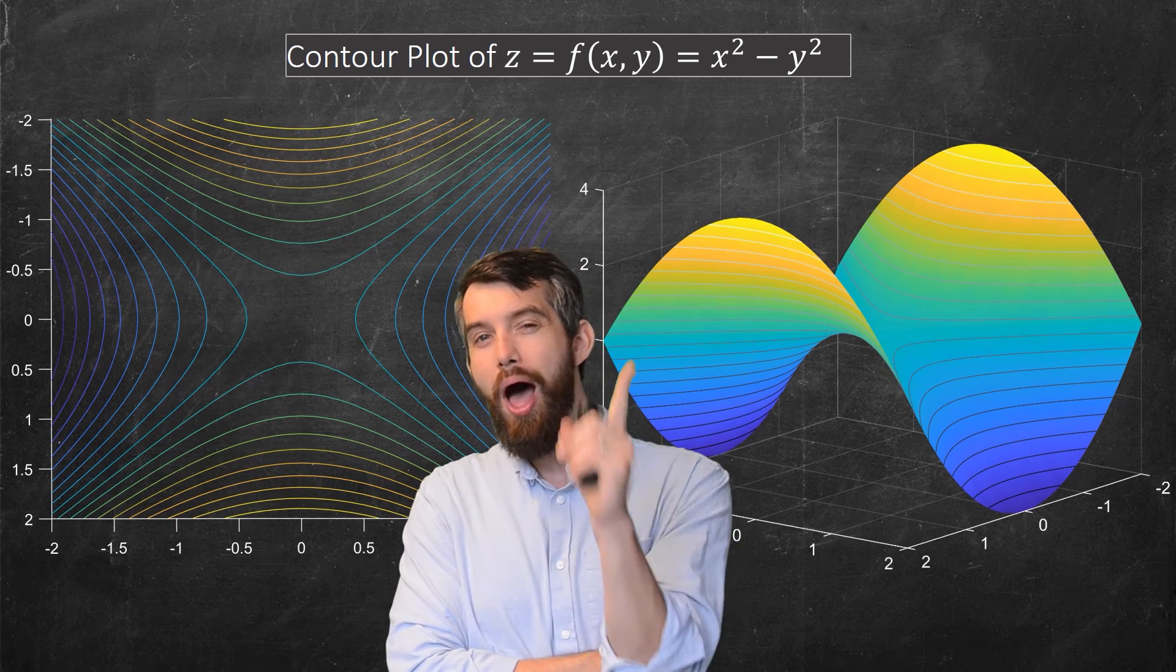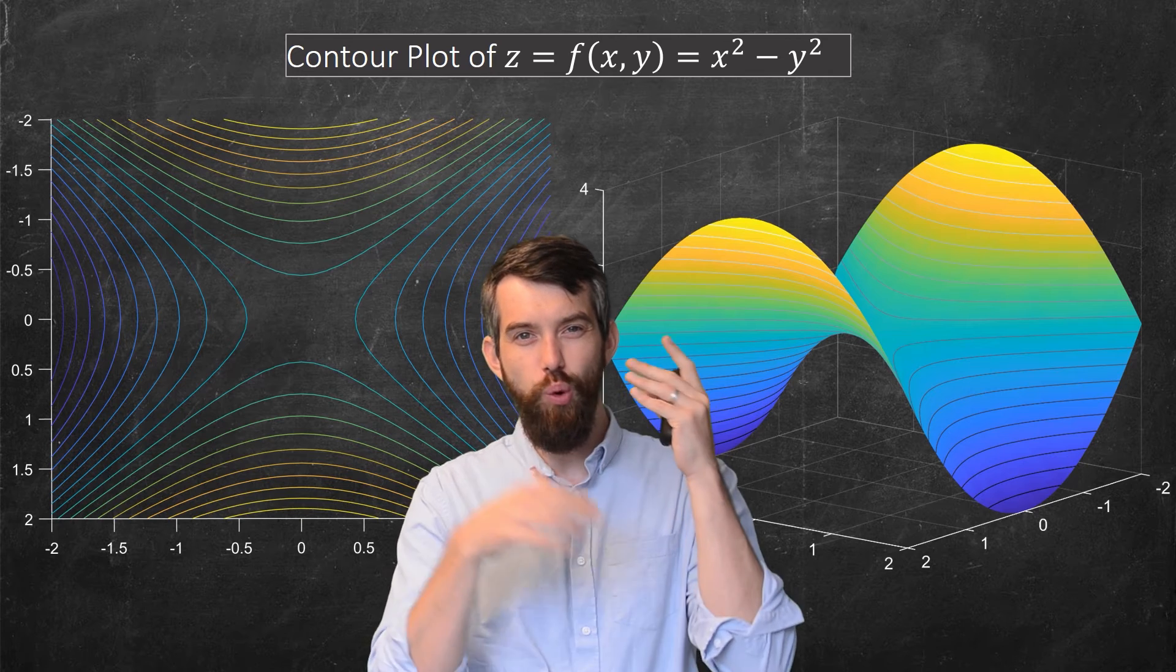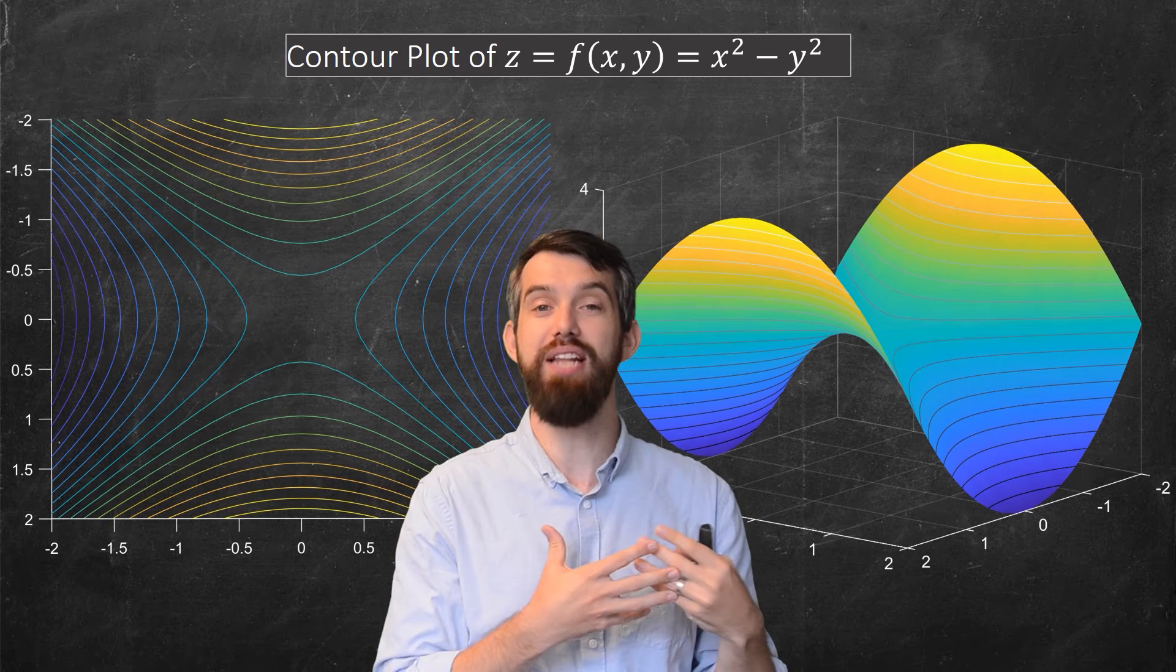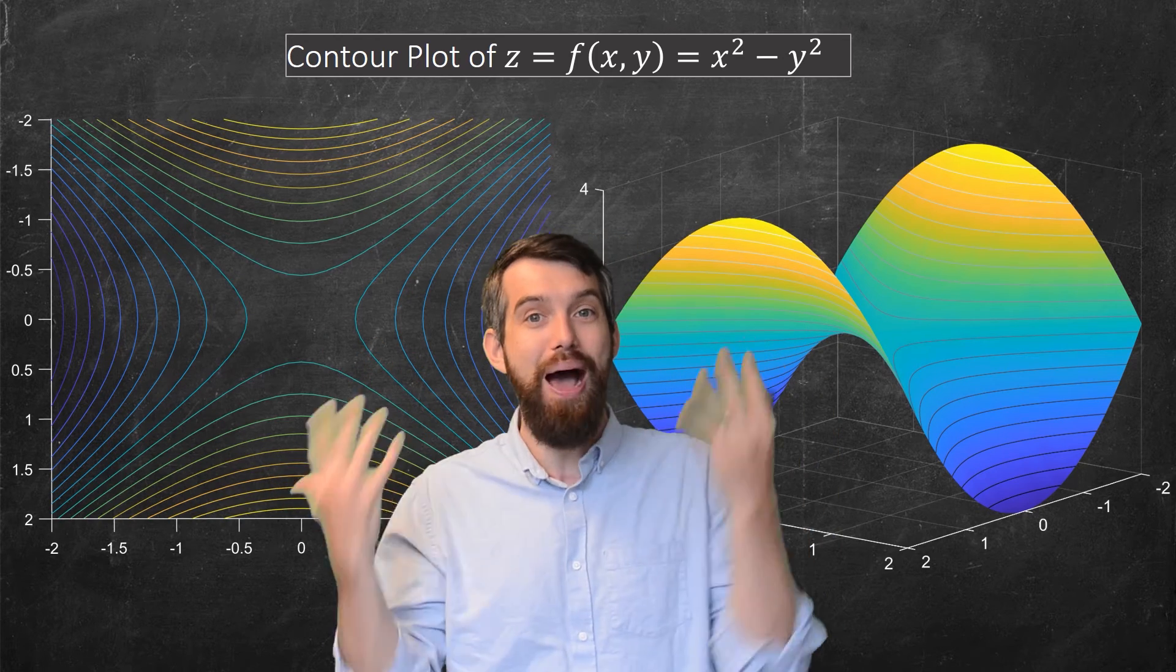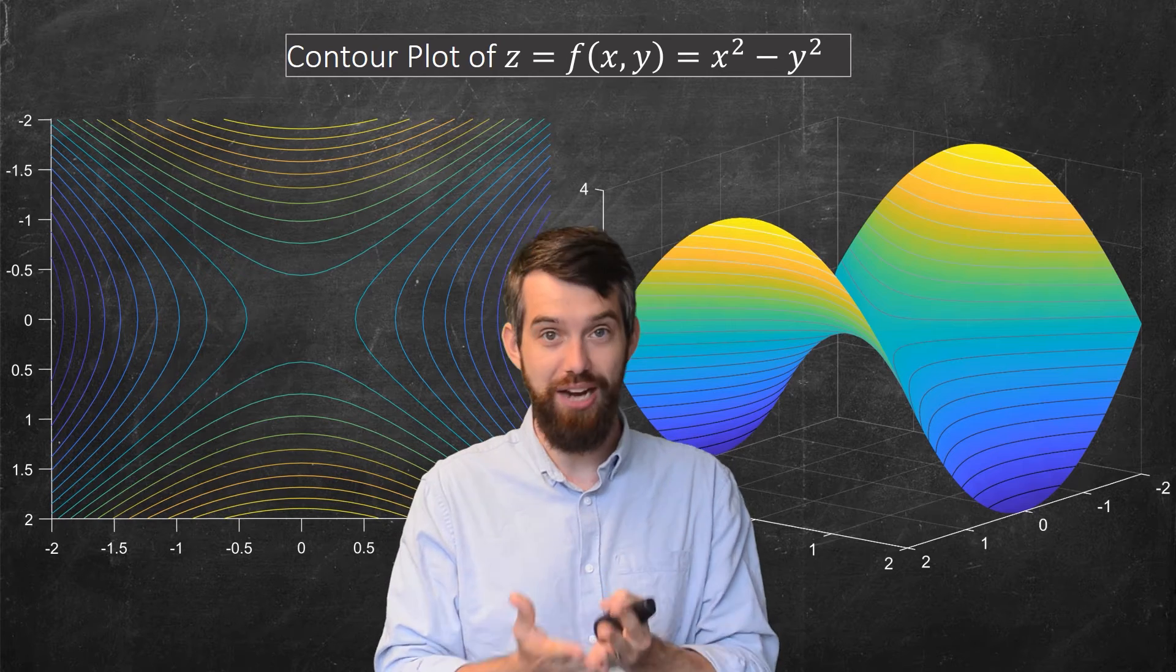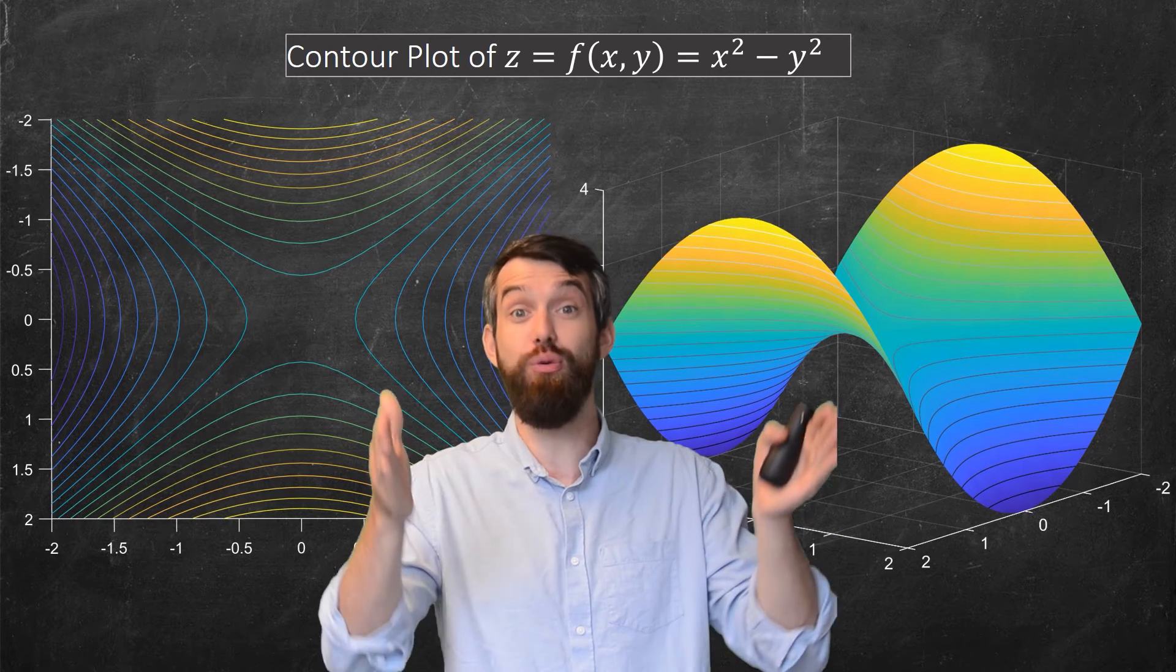Imagine first that y was equal to zero. If y was equal to zero, then you'd get z is equal to x squared. It would be a parabola that looks like it's going up, and this indeed looks the case. It looks like you're at a mountain pass, and on one direction, there's a parabola going up and getting increasingly yellow.